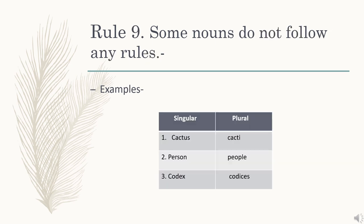Rule number 9: some nouns do not follow any rules — they have very different spelling in their plural form. For example: cactus becomes cacti, person becomes people, podets becomes podaxes.